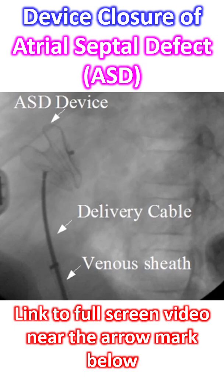Device closure of ASD is suitable for secundum ASD with a good rim all around for holding the discs together. Transesophageal echo is done to assess the superior, aortic, and mitral rims as well as the total septal length.